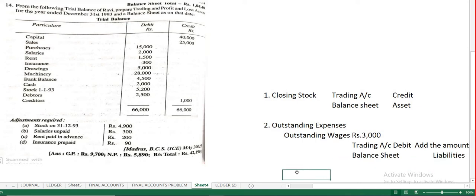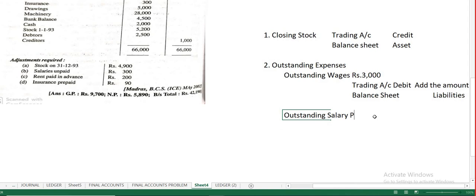Outstanding rent, outstanding salary — any of these outstanding expenses go under the liability side, specifically current liabilities on the balance sheet. For outstanding salary, since it is paid to admin employees, it comes under profit and loss account debit side, and the outstanding salary amount is added.